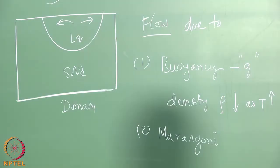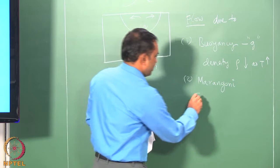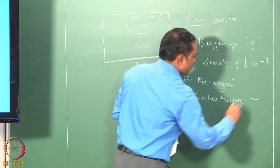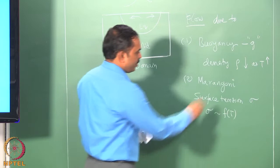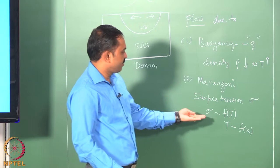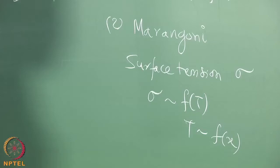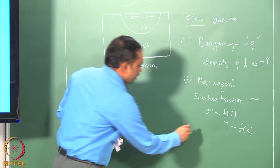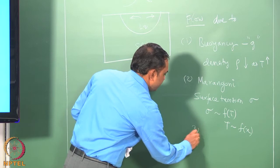The second reason is Marangoni convection. Whenever surface tension is changing with respect to location, this would drive flow. Surface tension is actually a function of temperature, and we already know that temperature is a function of distance in our case, which means that surface tension changes as a function of distance. Changes in surface tension lead to convection which is called Marangoni convection — that is the second important reason why there would be fluid flow within the melt pool.